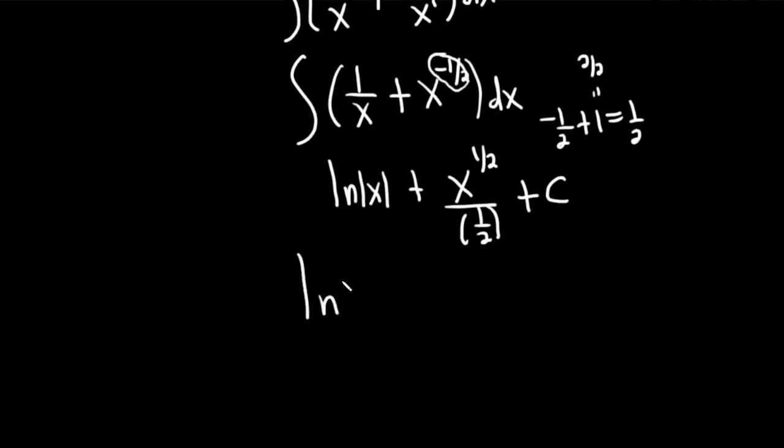This becomes the natural log of the absolute value of x. Here we're dividing by one-half, which is multiplication by the reciprocal. So it's two over one times this, which is basically just 2 times x to the one-half, plus our constant of integration capital C.